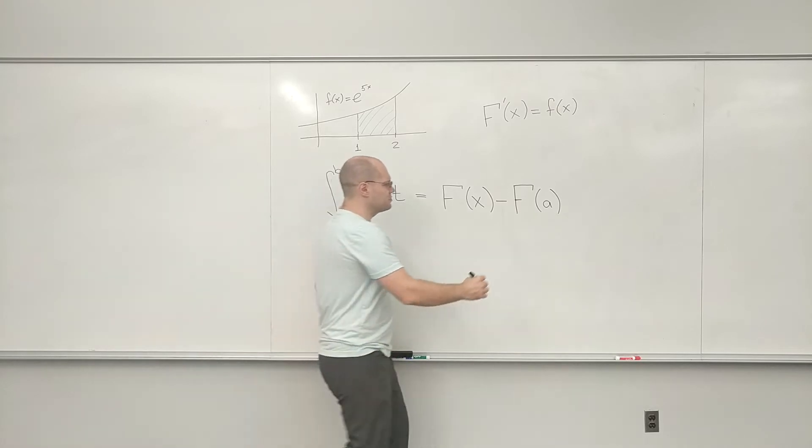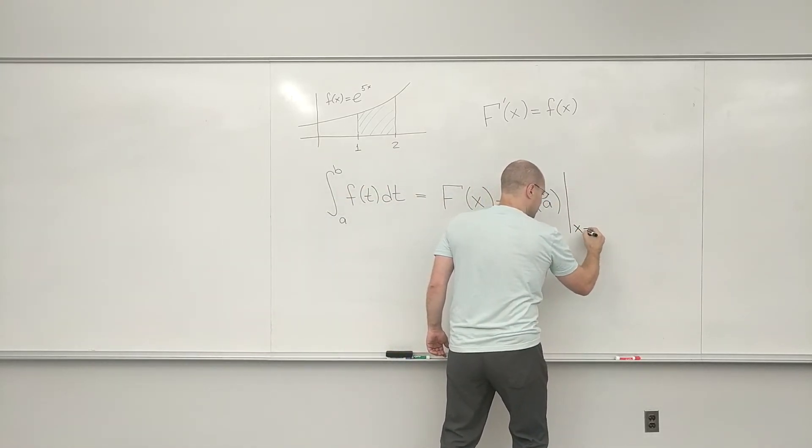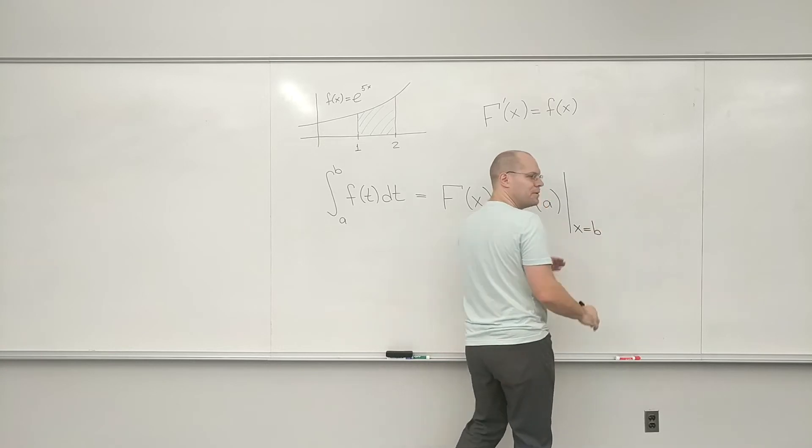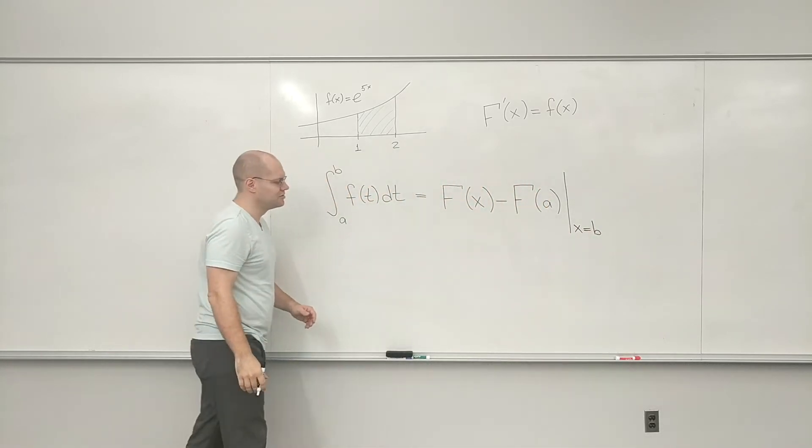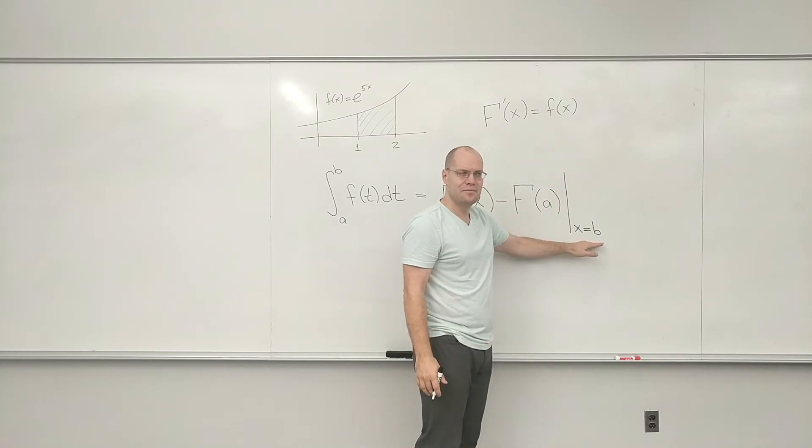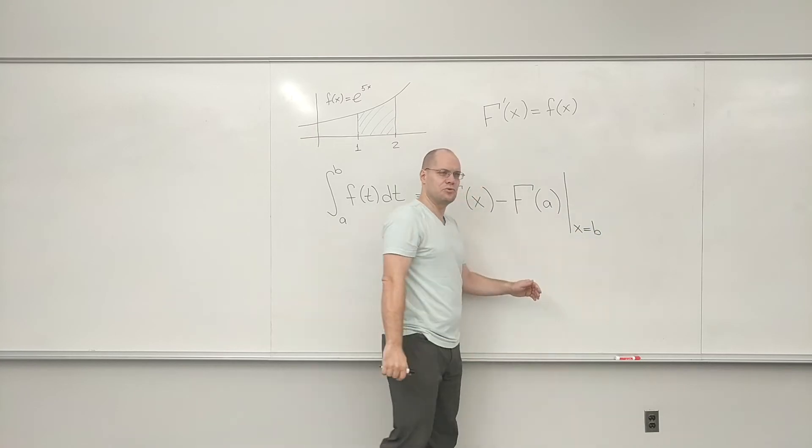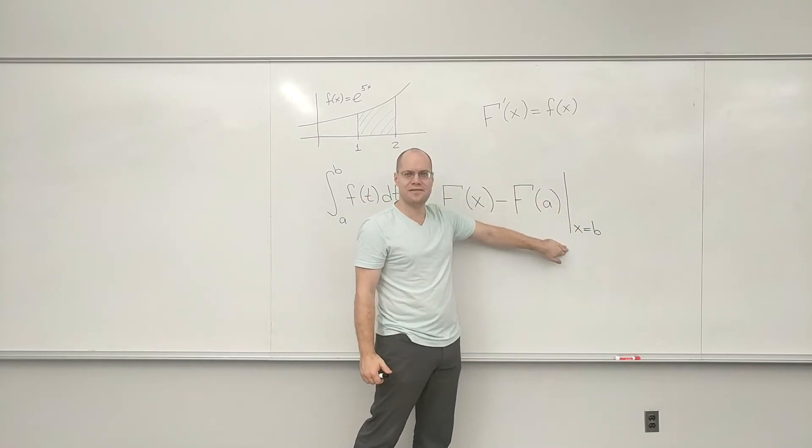And then all we have to do is plug in x equals B. So there's your vertical bar, although not in the way you're used to. Right now I just use this vertical bar, meaning plug in B for x.